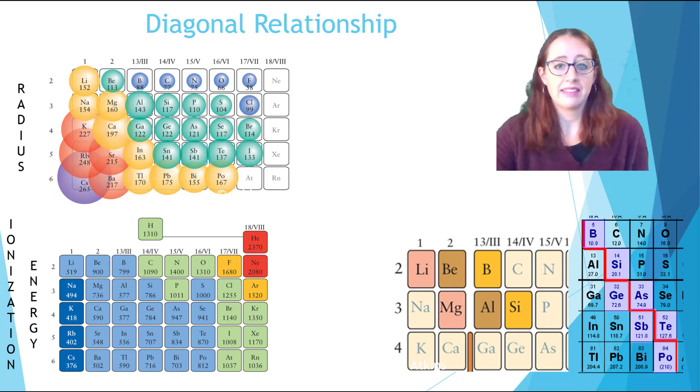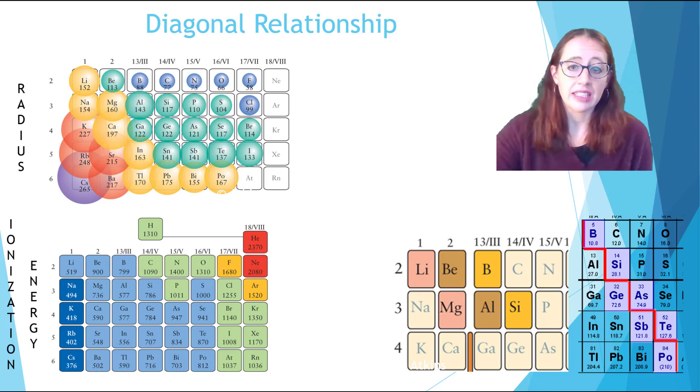Think about why this trend exists. First let's think about atomic radius trend. It gets bigger as you go down the periodic table and it gets smaller as you go to the right across the periodic table.